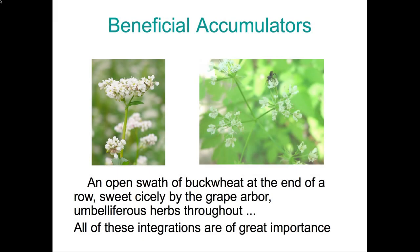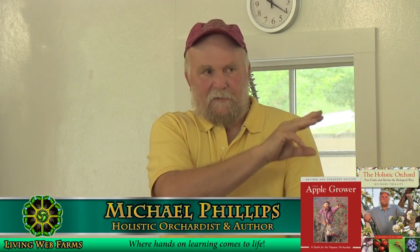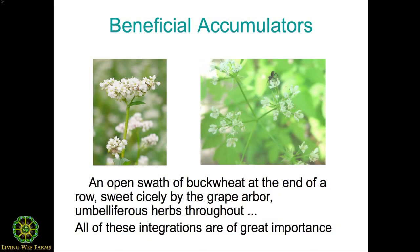Another term is that of beneficial accumulators. These are the flowering plants that attract the adult parasitic wasps and flies, which in turn lay their eggs and larvae into the pests that are after our fruit. You don't get larvae controlling pest larvae unless you have the habitat for the adult forms of these different insects. So beneficial accumulators start to build those numbers.